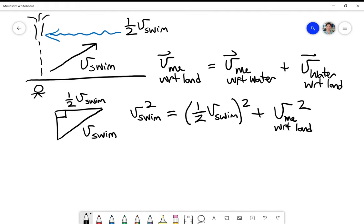Okay, and so what we get here is that V swim squared one minus one half squared is equal to V me with respect to the land squared. And if I take the square root of both sides...